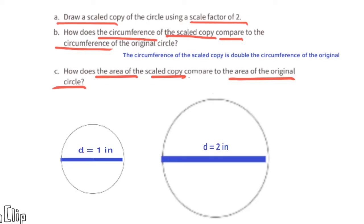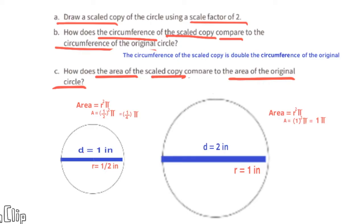Part c: how does the area of the scaled copy compare to the area of the original circle? The formula for area of a circle is radius squared times pi. The radius of the original circle would be one-half inch, so the area is one-half squared times pi — one-half of a half is one-fourth — giving one-fourth pi. The radius of the scaled copy is one inch, so the area is one squared times pi, which equals pi. The area of the scaled copy is four times the area of the original.